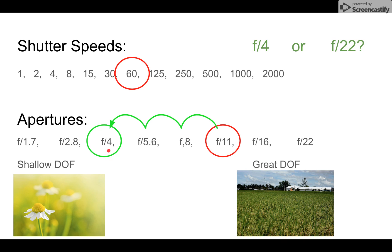And then we know that we need to move the equal and opposite direction in our shutter speeds. So that is 1, 2, 3 over to 1 over 500.